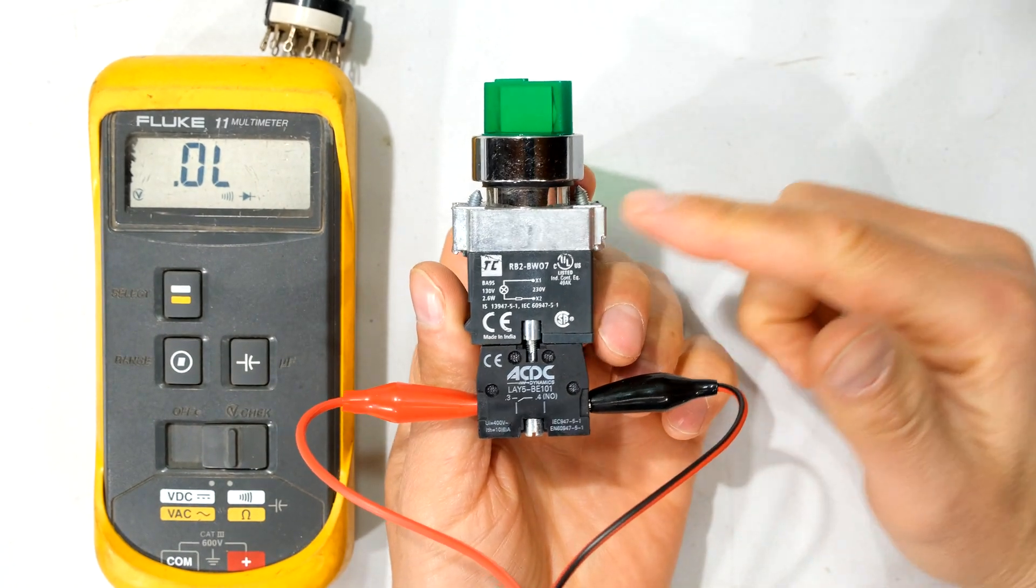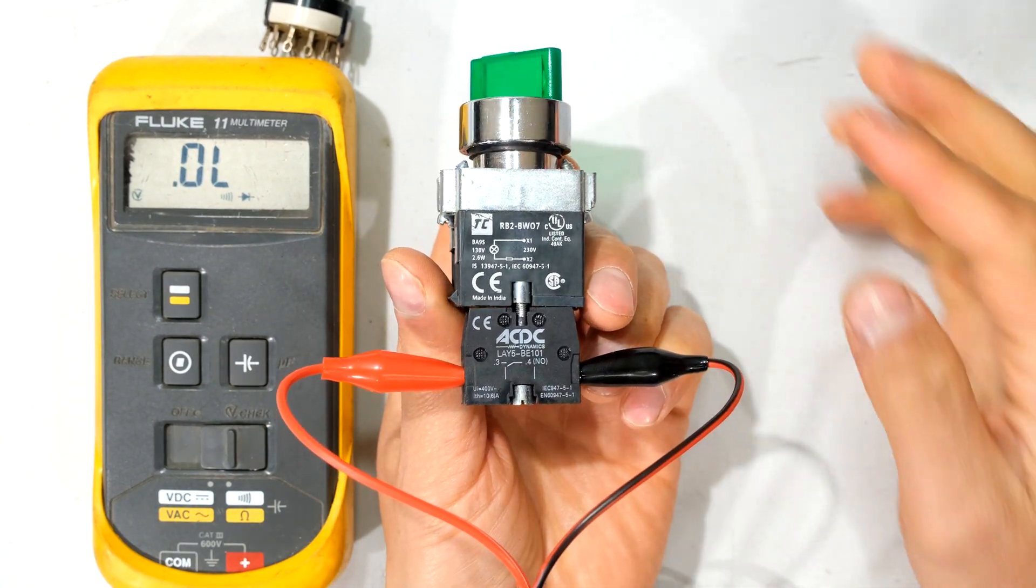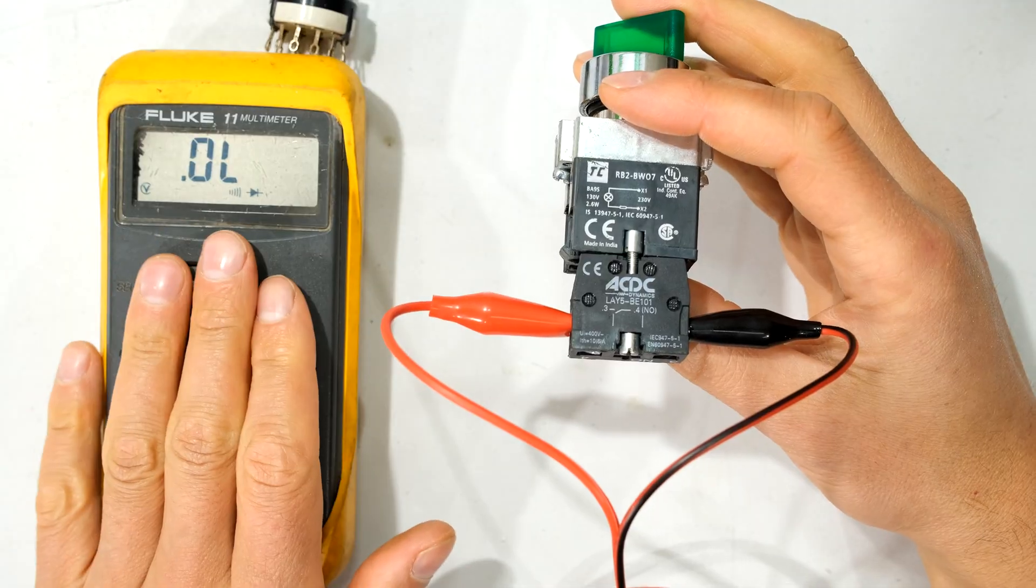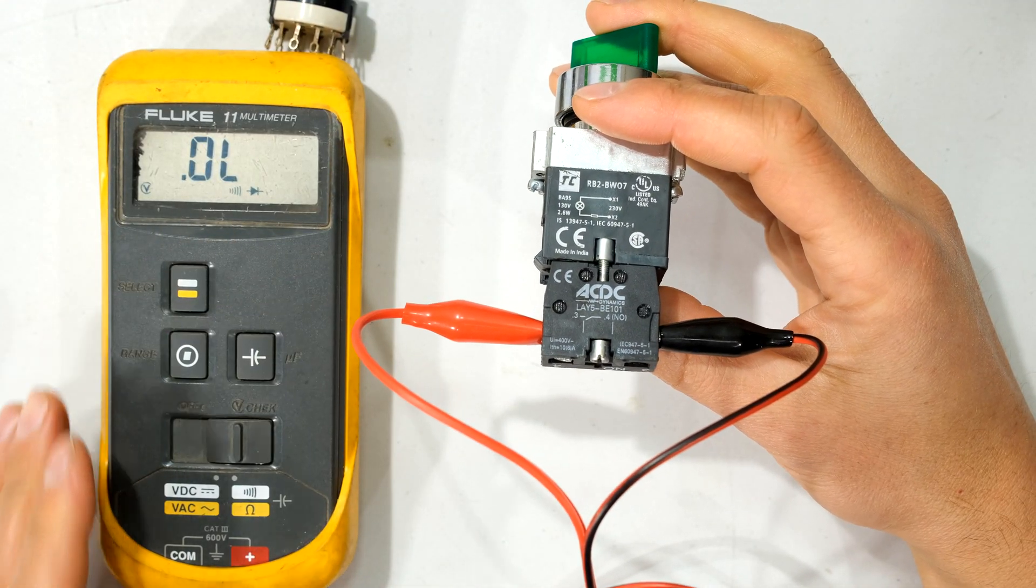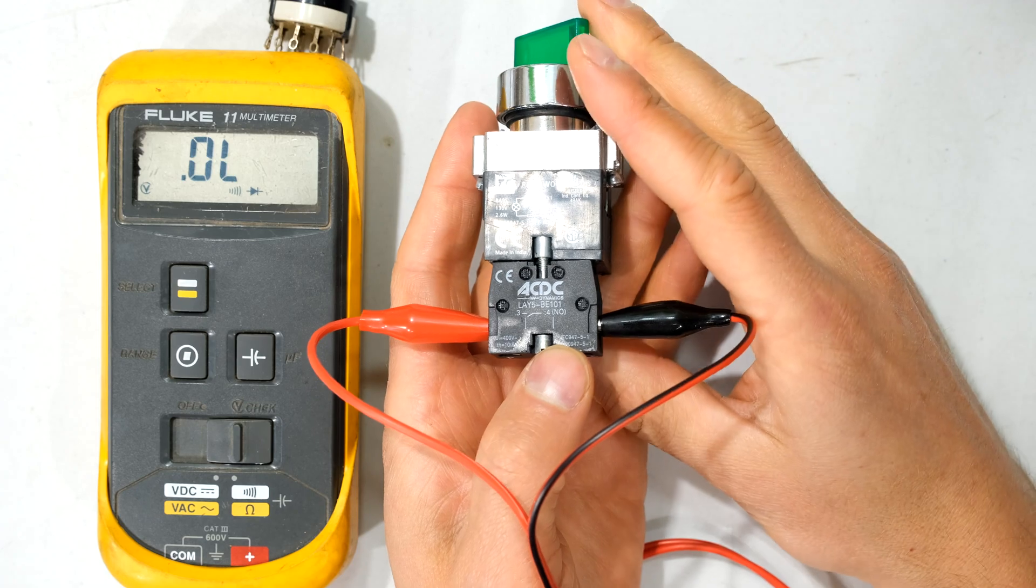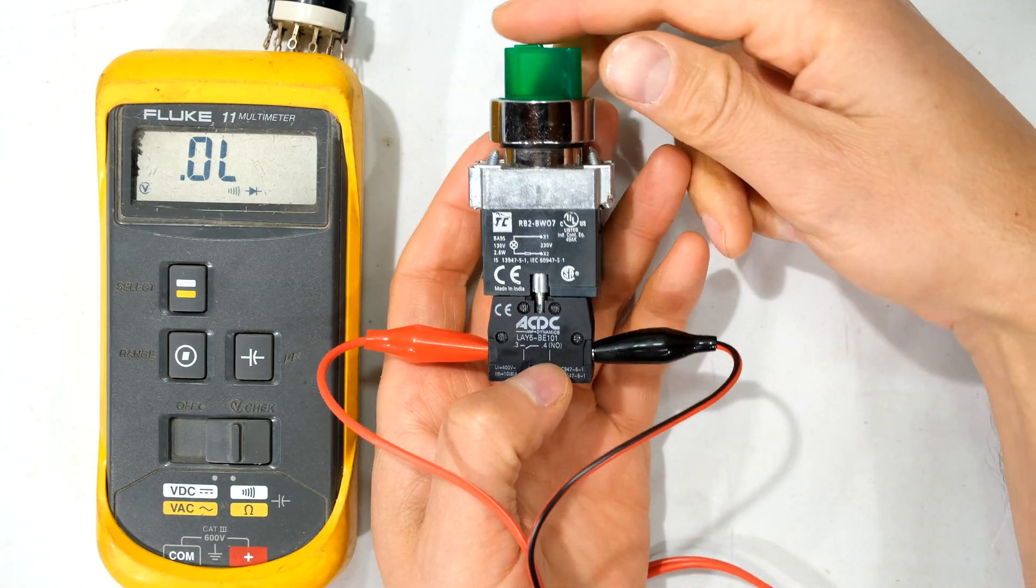Over here I have a rotary switch. I've connected my multimeter to the terminals of the switch. My multimeter is set to continuity. That means that when there's a short circuit, the meter will make a buzzing sound.